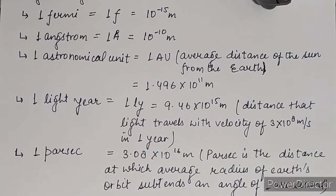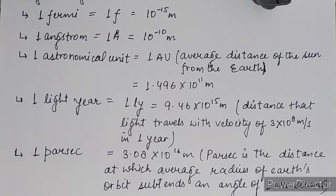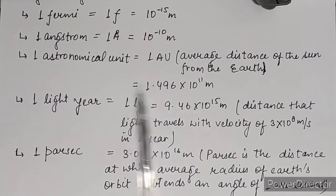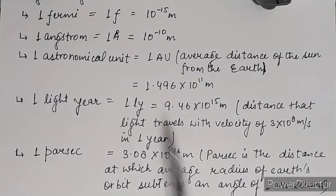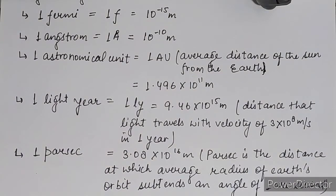So parsec is the distance from the average radius of the Earth's orbit — the orbit on which the Earth is revolving — such that it makes an angle of one arc second. That is your one parsec. So these are the ranges of length.